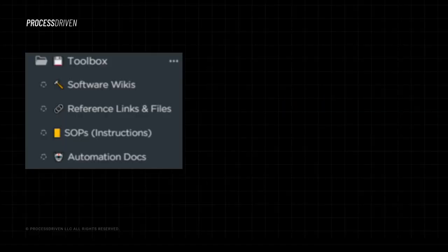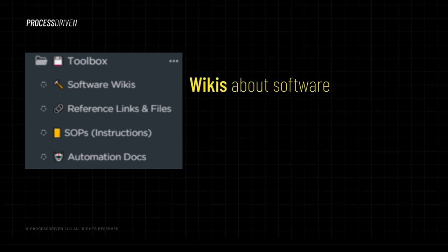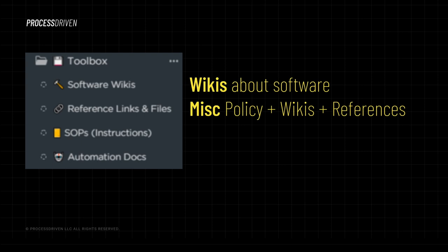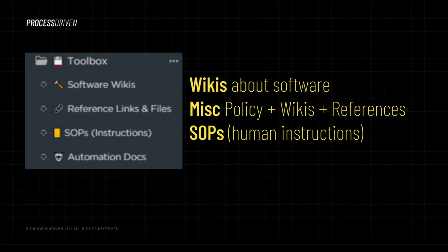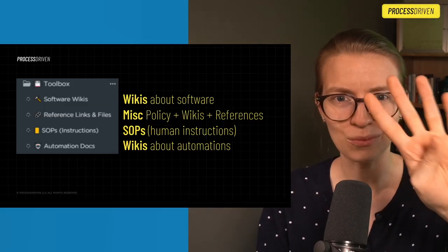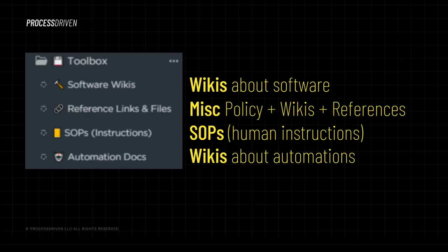To show you what this looks like inside my own ClickUp account, this is our folder called Toolbox, where we have software wikis, reference links, SOPs, and automation docs. The software wikis are general information about our software. The reference links and files show our miscellaneous policies, wikis, and references — a catch-all area of random stuff we might want someday. The SOPs are instructions for the humans. And the automation docs are wikis about the automations we use and rely on in our business. So basically: wiki, miscellaneous, SOP, and wiki again.